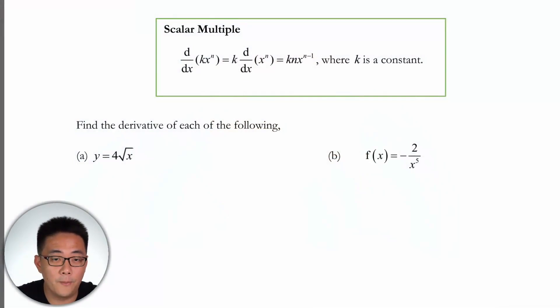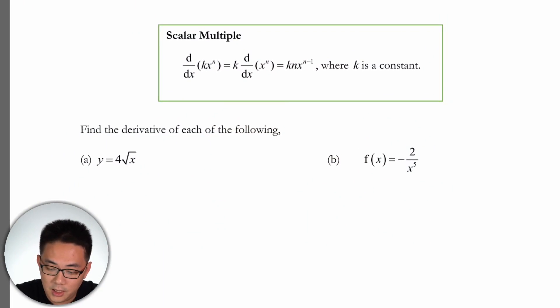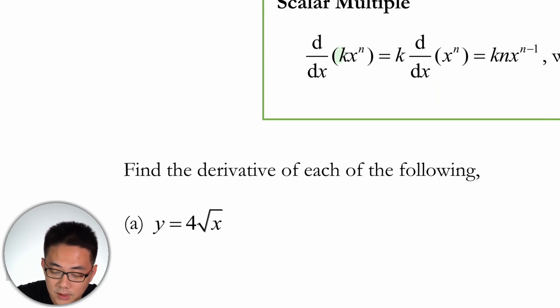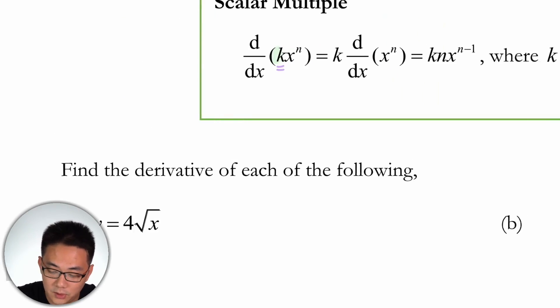Hi students, let's look at this question here. This concept is on scalar multiple. We have already explored the power, the derivative of a power function. So how would we do it when there is a constant in front of the power function? The answer is pretty simple. The constant will not affect it.